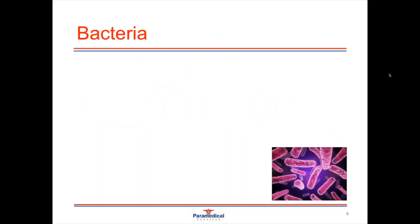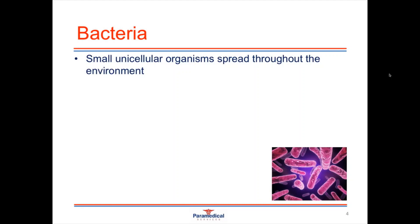Bacteria are the first pathogenic agent we're going to look at. You can see a picture of what bacteria look like under a microscope in the right-hand corner. They are quite simple in structure and are unicellular organisms, spread right throughout our environments. They have the ability to live independently of other organisms — bacteria do not need a human or animal host to survive. They can survive, breed and replicate on any object, such as a desk, shower floor, mobile phone or money.